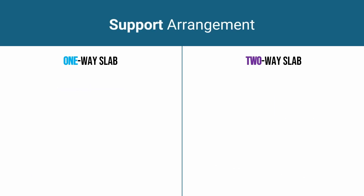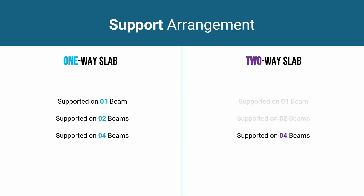Looking at support arrangements: a one-way slab could be supported on one beam, as seen in cantilever slabs, or on two beams where deflection occurs only along the free direction — giving it the name one-way slab. It can also occur in slabs supported on all four sides by beams or walls. For a two-way slab, it is only possible when supported on all four sides by beams or walls.